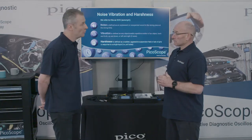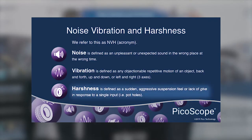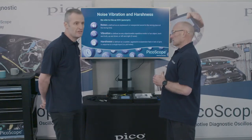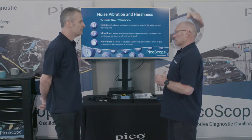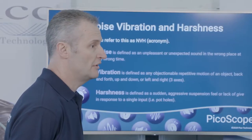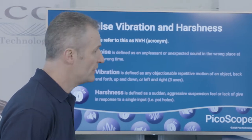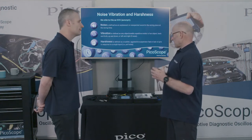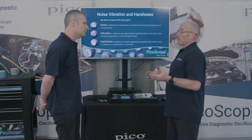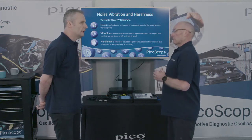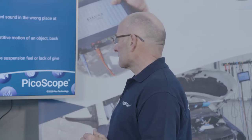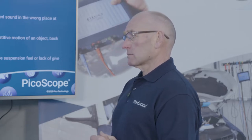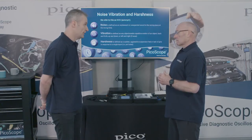Harshness is defined as a sudden, aggressive suspension response — a lack of give to a single input. That would be a pothole or suspension bottoming out — a real harshness between the road surface and the steering wheel that you feel transmitted through the cabin, steering wheel, floor pan, or seat. Harshness is essentially a relationship between the environment the vehicle is operating in and how the vehicle instantaneously responds to that event. Knocking events in suspension are singular events and a real nuisance — trying to diagnose them is challenging and subjective at best unless we can measure them.